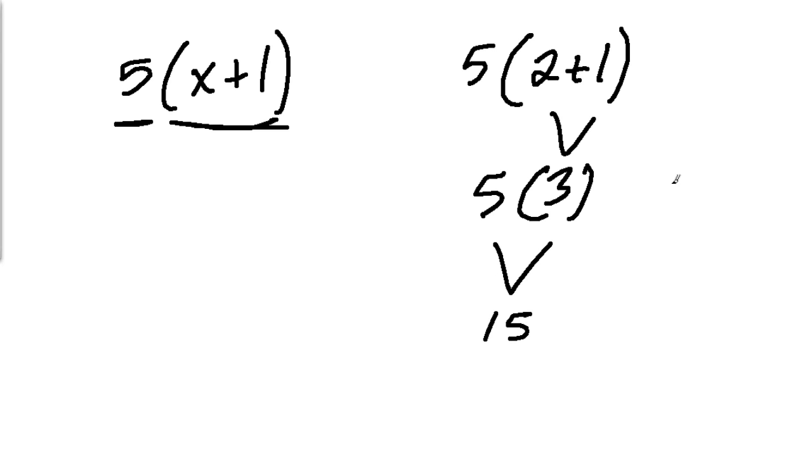Or the distributive property says you could do 5 times 2 plus 5 times 1. And you would get 5 times 2 plus 5 times 1, which is 10 plus 5, which is also 15.